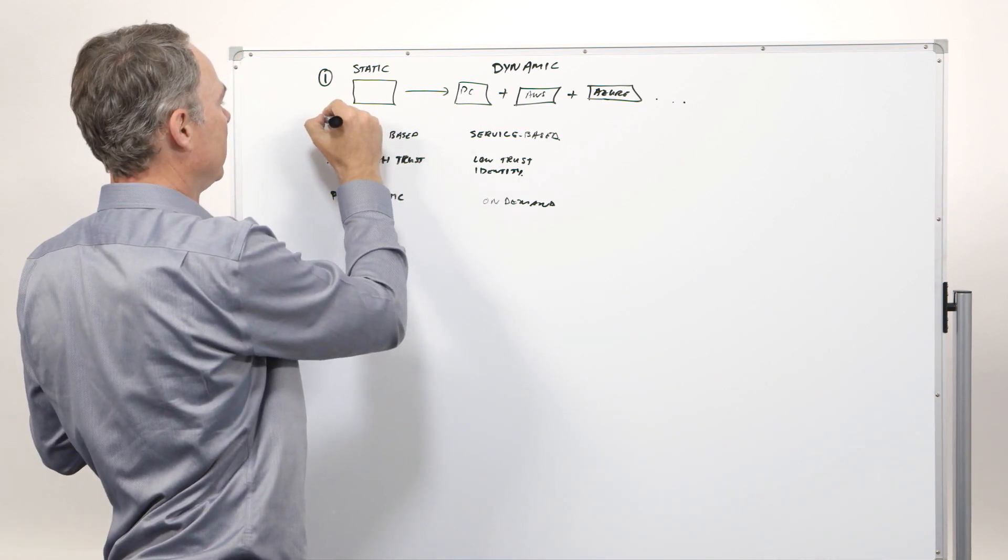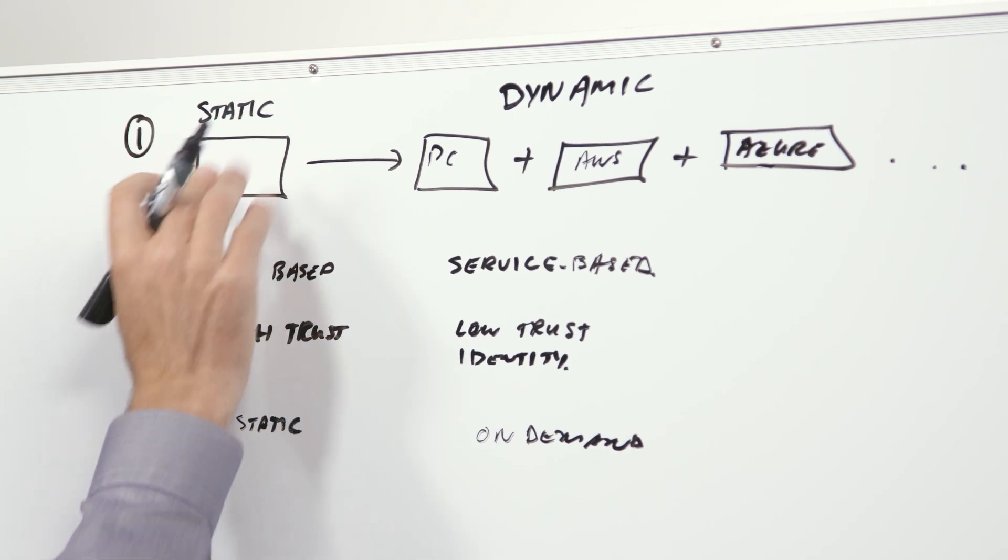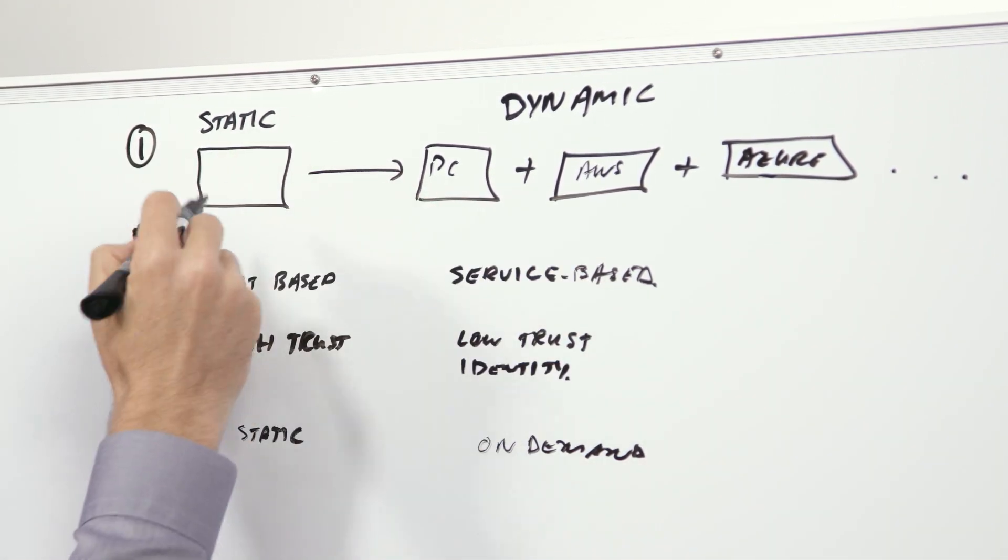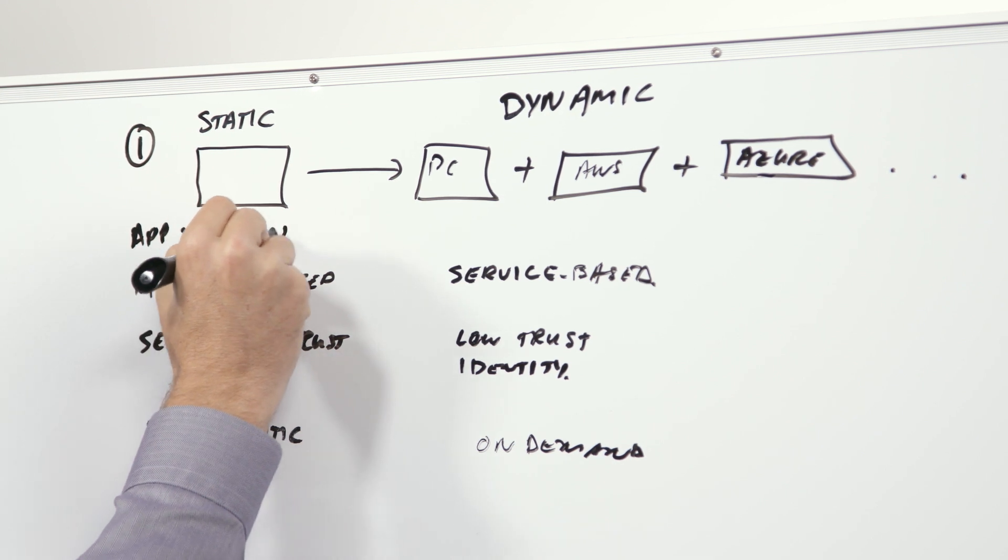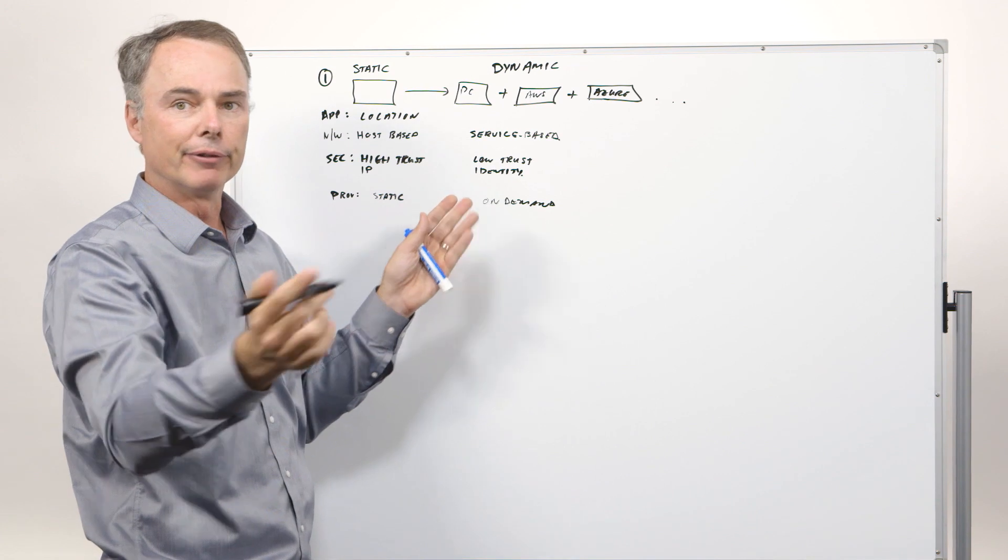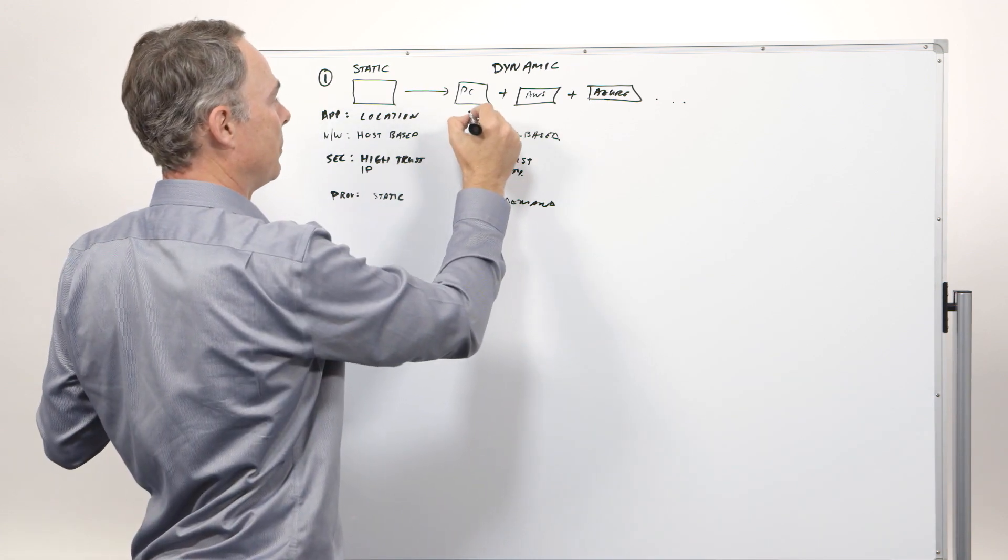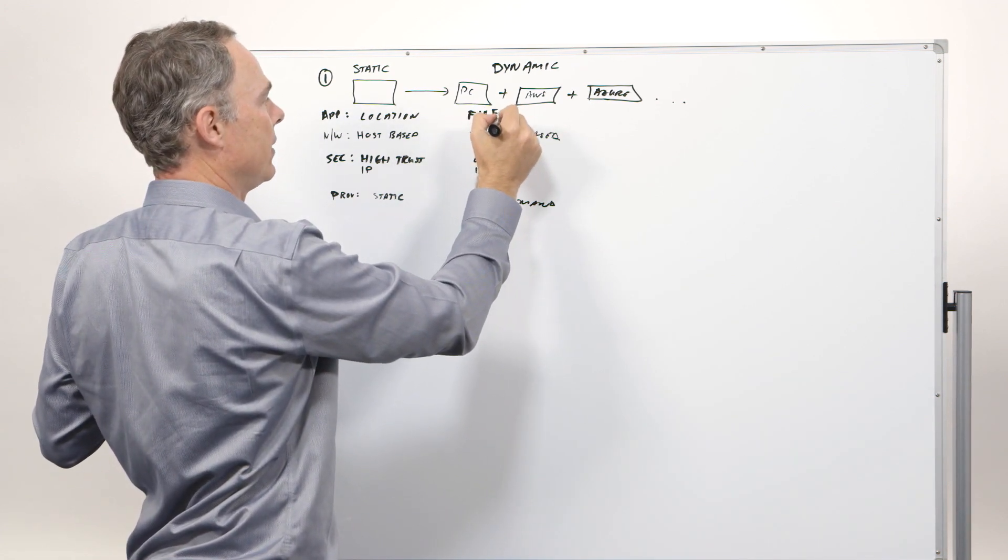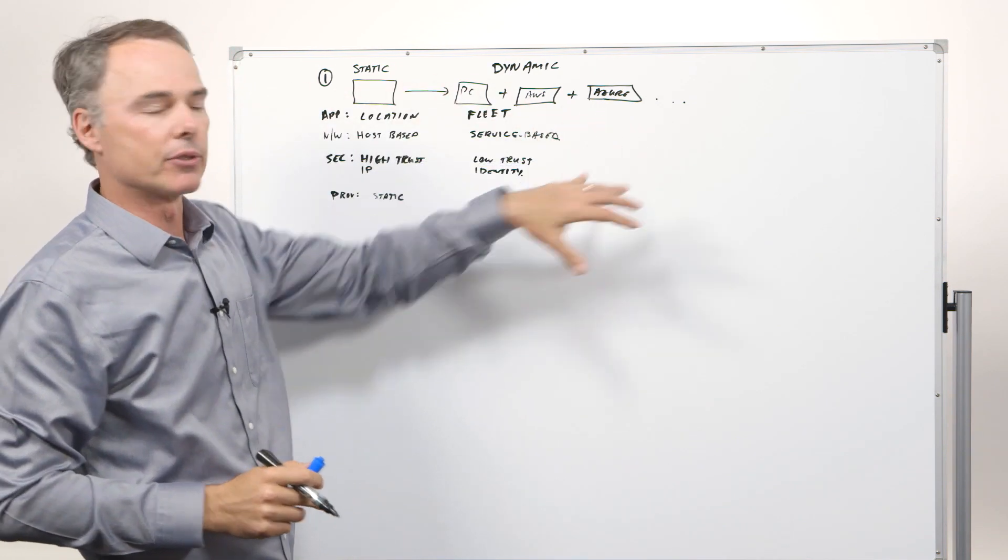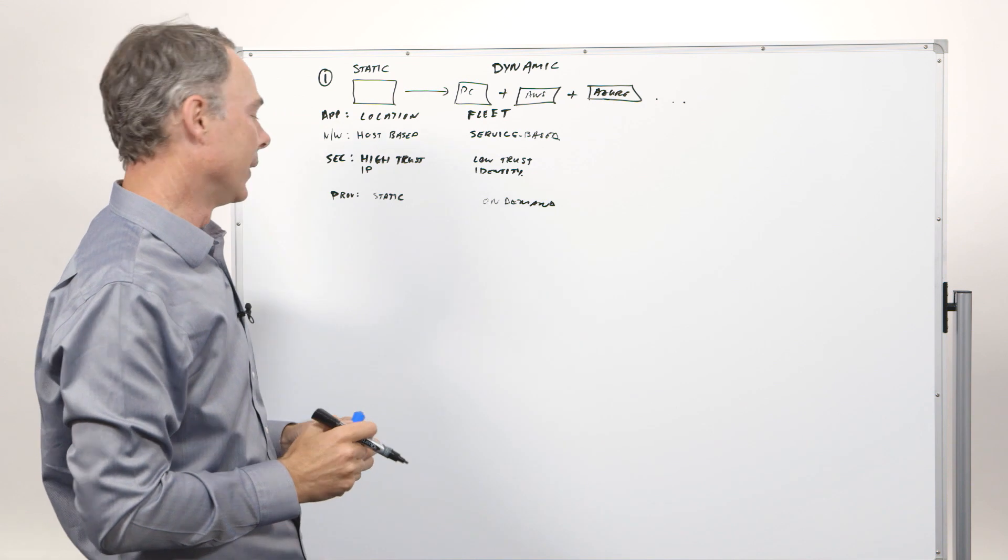And then, for the application developer, I'm no longer deploying an application to a physical location. I'm deploying an application perhaps using something that's running across the distributed fleet. So, it's basically, I'm deploying an application to a fleet. So, at its core, this represents a completely different model for how to think about infrastructure relative to the world that we're all familiar with.